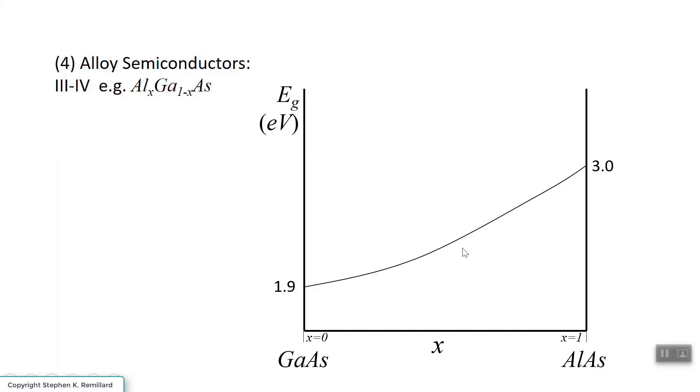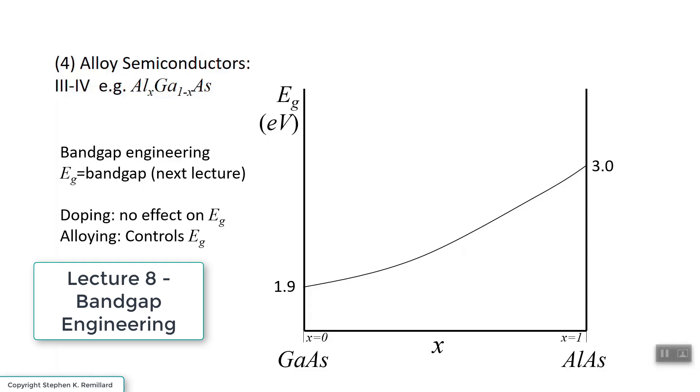Controlling the bandgap with the alloy ratio is called bandgap engineering. It will be the subject of our next lecture. Alloying is used as a method of controlling the bandgap. Doping doesn't affect bandgap. And that's an important thing to remember. The bandgap of a semiconductor does not change as you dope it. You simply change the carrier concentration as you dope it. Alloying controls the bandgap.